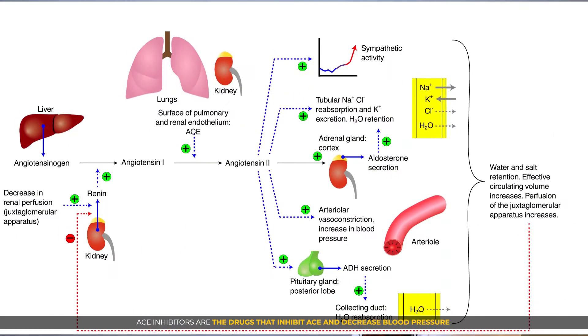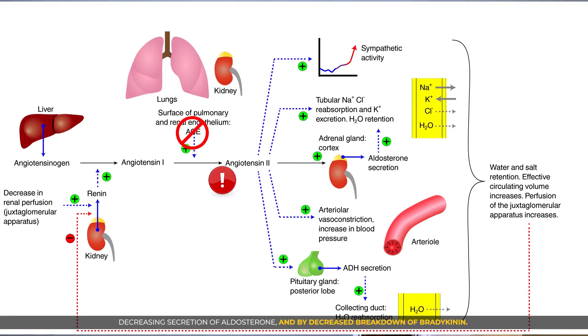ACE inhibitors are drugs that inhibit ACE and decrease blood pressure by decreasing the conversion of angiotensin 1 to angiotensin 2, and by decreasing the secretion of aldosterone and decreasing the breakdown of bradykinin.